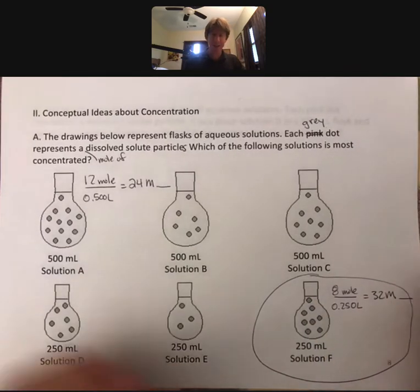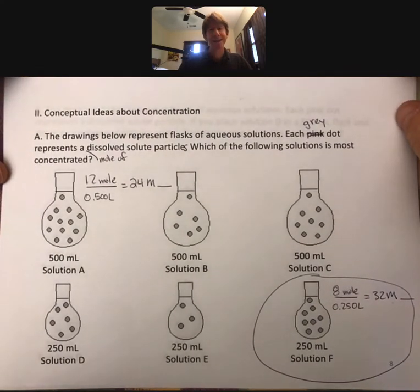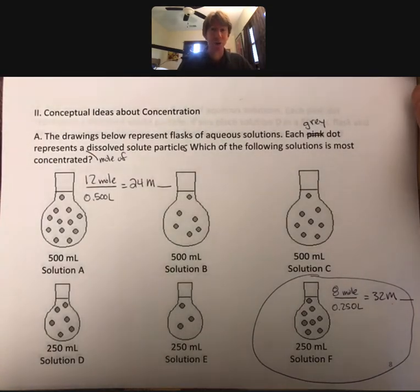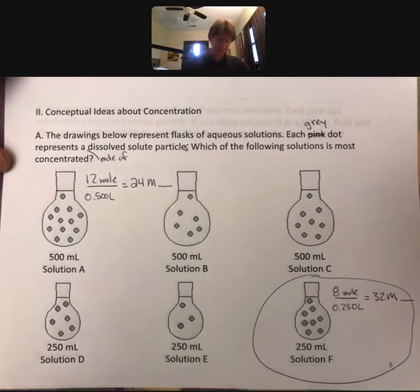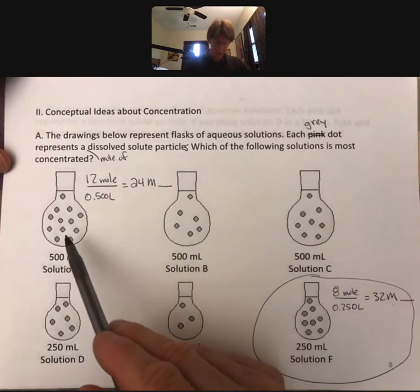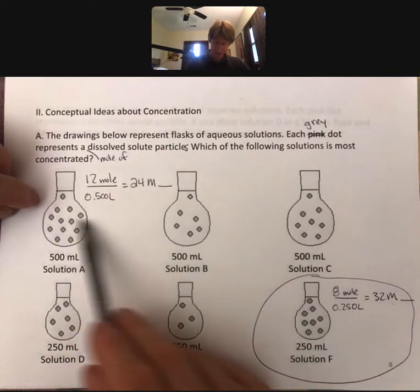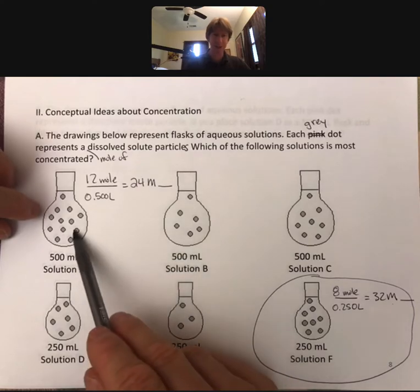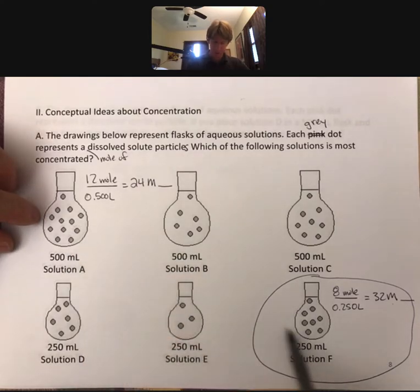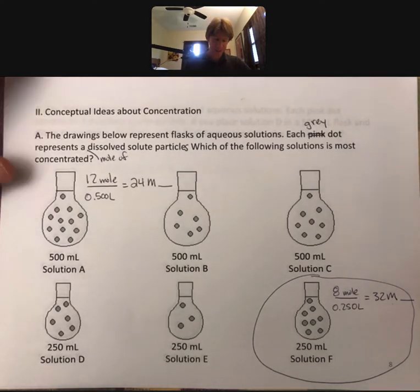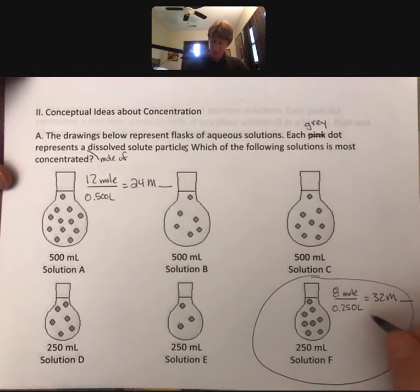Another thing is, if you were trying to do this on the homework - since these are going to be similar problems on the homework - you want to compare both. It's easy to do these if they have the same volume because then you can just count dots. When they have different volumes, you need a method to evaluate them. One tool that I've learned over the years is that even if they don't give you the numbers to do...